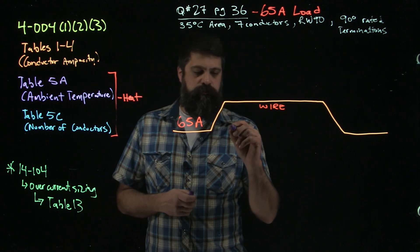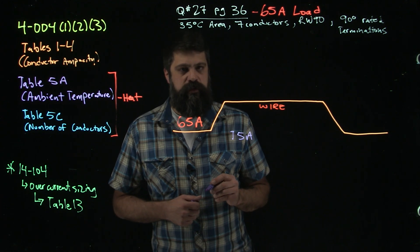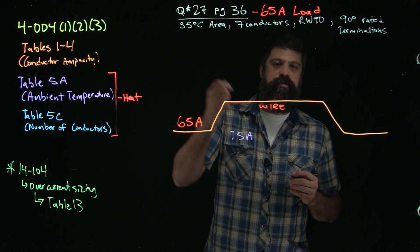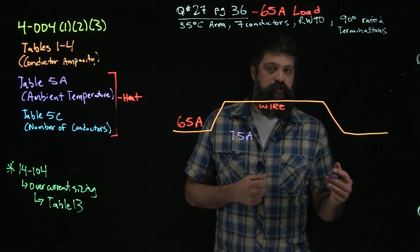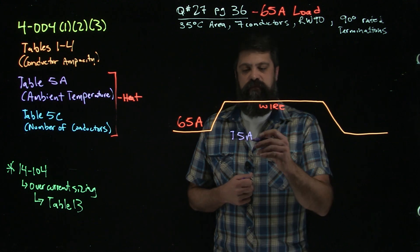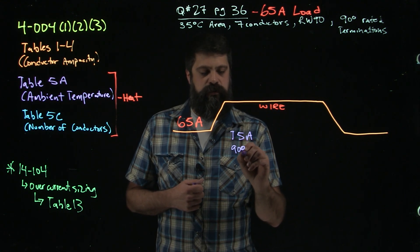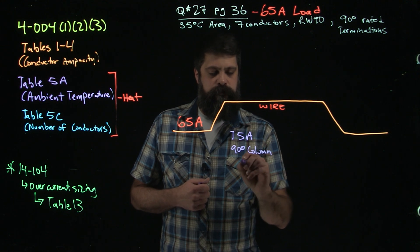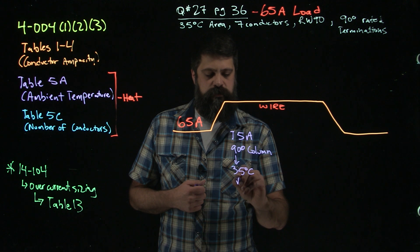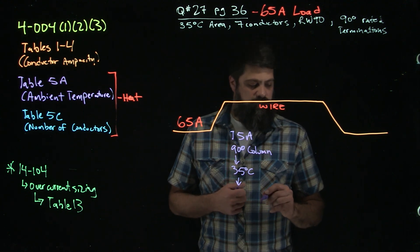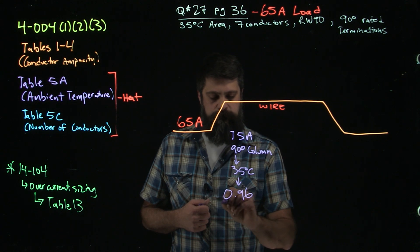So Table 5A is going to give us a number. If I take 35 degrees, I need to make sure that I'm looking in the proper column for what that derating factor is. Table 5A, I'm looking in the 90 degree column at 35 degrees Celsius, which gives me a factor of 0.96.